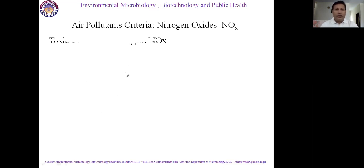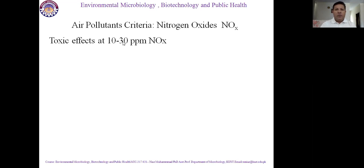When the concentration of nitrogenous gases is higher in the environment, its toxic effect occurs at 10 to 30 ppm of nitrogen oxide. When the concentration of nitrogen oxide is in the range of 10 to 30 ppm, it has a toxic effect on the people who are living in that environment.